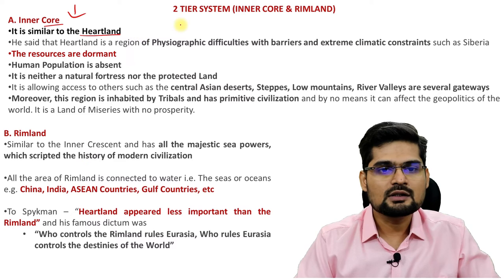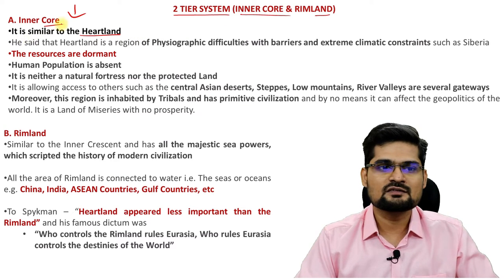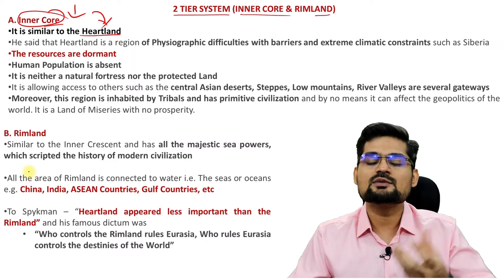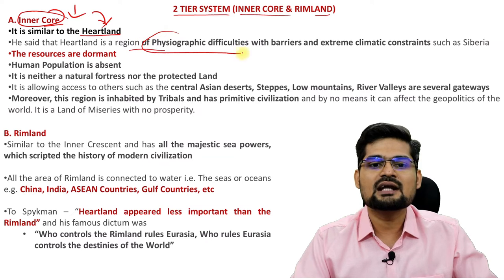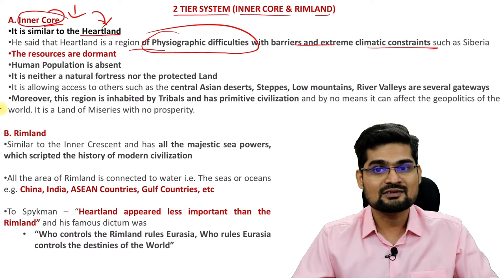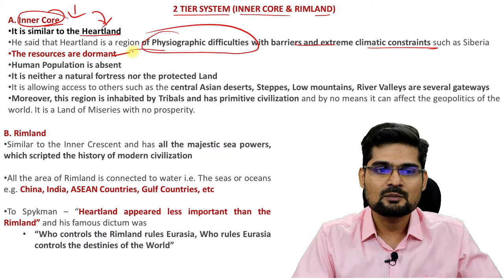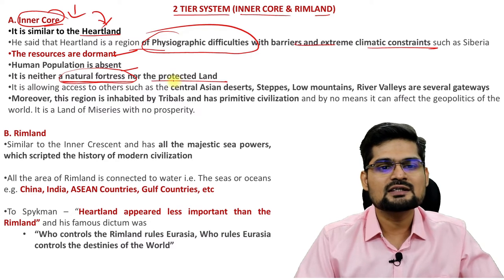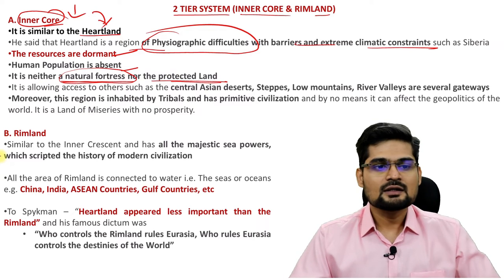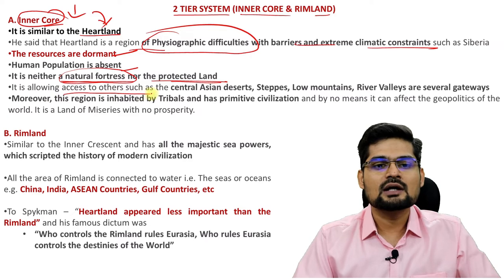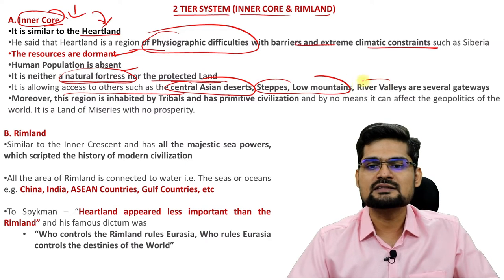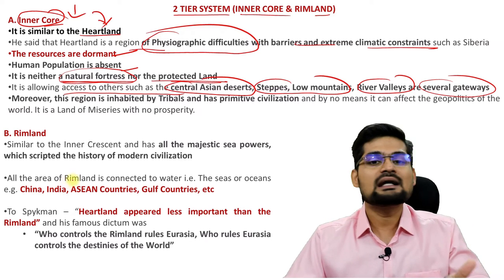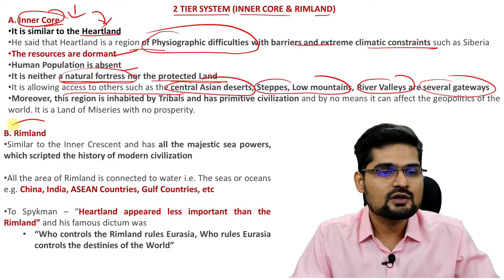In Speakman's model, with its two-tier system of inner core and rimland, the inner core is similar to the heartland. He said the heartland is a region of physiographic difficulties with barriers and extreme climatic constraints — like Siberia and others. It is also resource-dormant, with very sparse population, and does not have natural fortresses or protected land. It allows access to others through Central Asian deserts, low mountains, river valleys, and several other gateways.